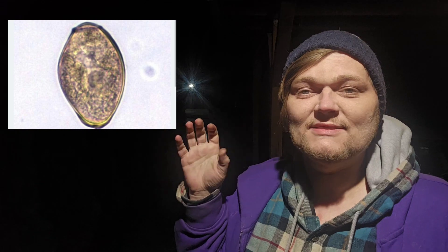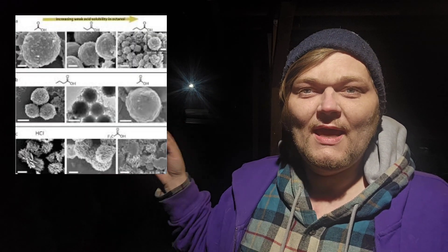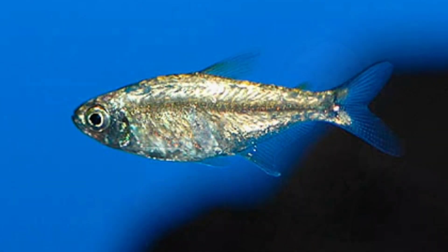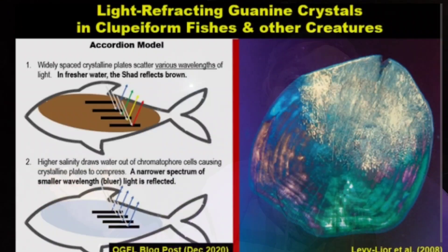We're going to be talking about how those scales shimmer and how fish actually use optics, chemistry, evolution, and biology as well as a little bit of physics to fit into the light cycle from every color under the rainbow.